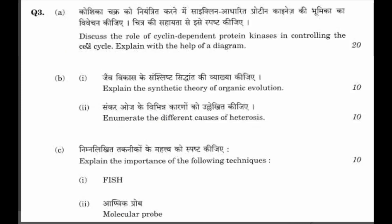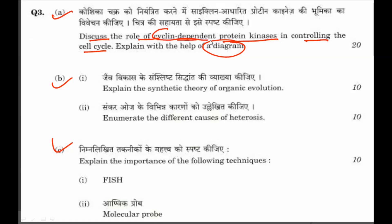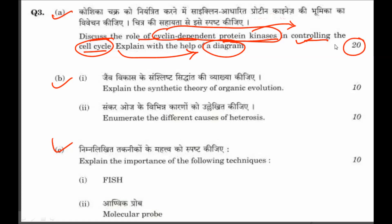Question 3 is divided into three sub-questions A, B and C. Sub-question A: discuss the role of cyclin-dependent protein kinase in controlling the cell cycle, and explain with the help of a diagram. This is a question from cell signaling in which you have to discuss the role of cyclin-dependent protein kinase in controlling the cell cycle, with a suitable diagram, for 20 marks.